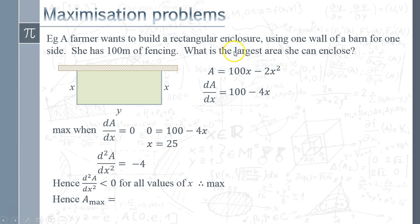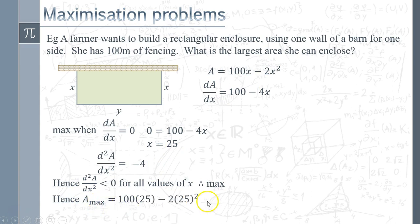The question asks what is the largest area she can enclose, so we take x = 25 and substitute it back into our area formula. The maximum area is 100 × 25 − 2 × 25², which equals 1250 meters squared. The question is answered: we've found the maximum and confirmed it is indeed a maximum.